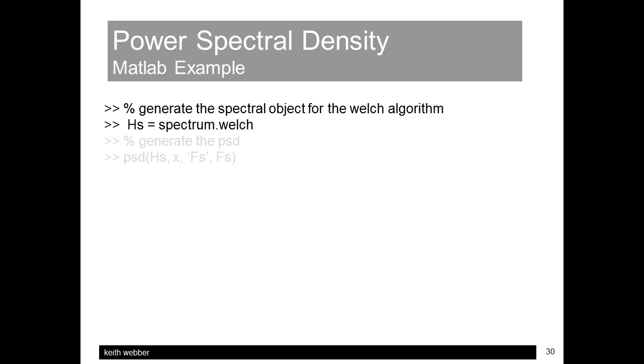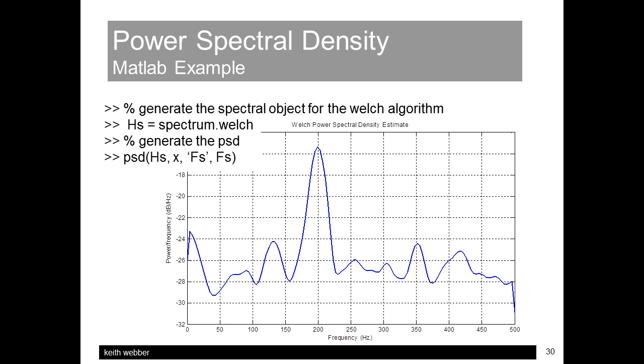The default settings are for a hamming window with 64 sample chunks overlapping each other by 50%, along with a specification of a one-sided PSD, running from 0 up to the Nyquist frequency of 500 Hz. The PSD call specifies the spectral data object HS, the data X, and the sampling frequency step FS. The results show the expected peak at 200 Hz, and noise power spread across the spectrum.